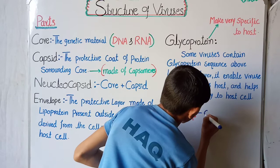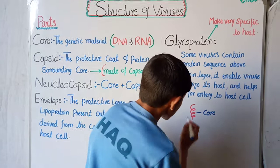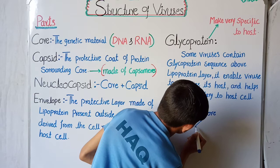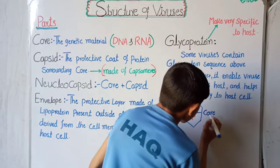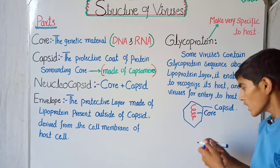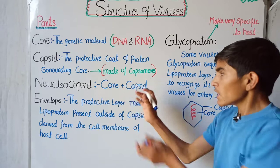The capsid is made of protein and it surrounds the core. It is responsible for protecting the internal genetic material, which is the core.